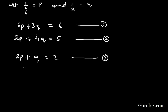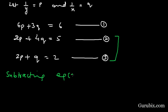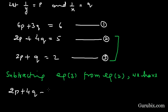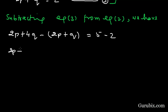We observe that the coefficient of p in both equation number 2 and equation number 3 is the same. So we subtract equation number 3 from equation number 2: 2p plus 4q minus 2p minus q equals 5 minus 2, which gives 3q equals 3.